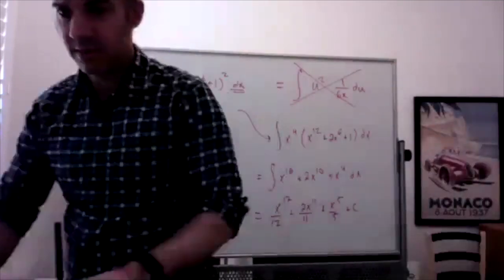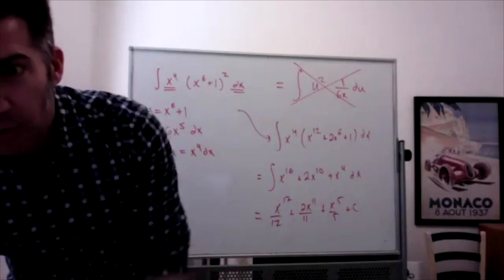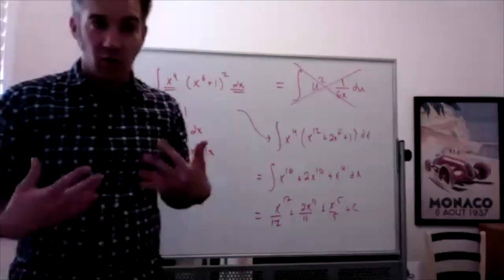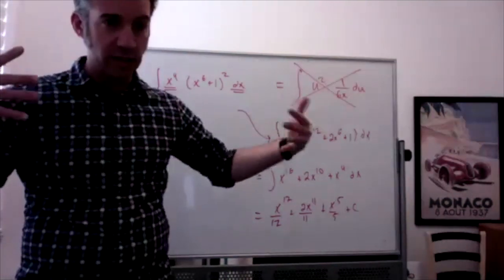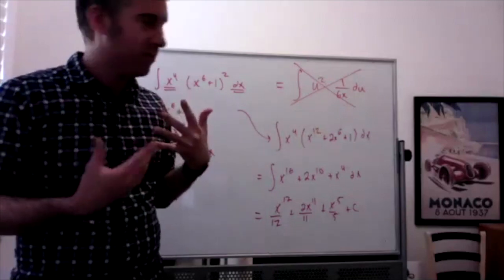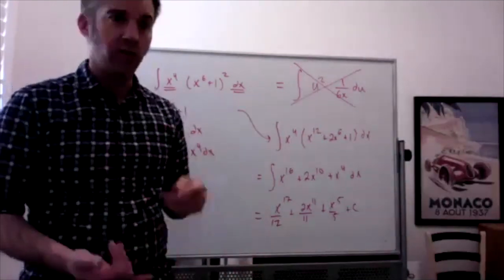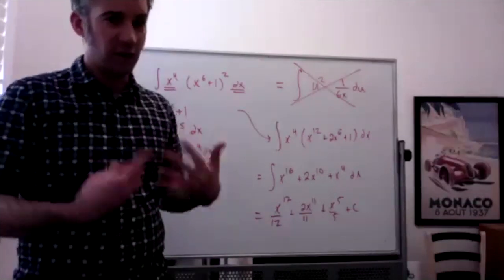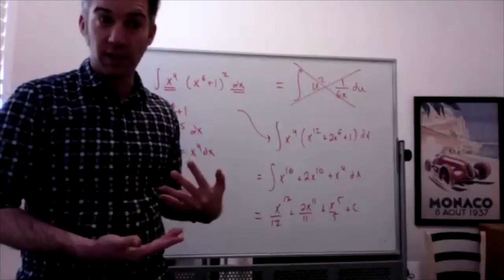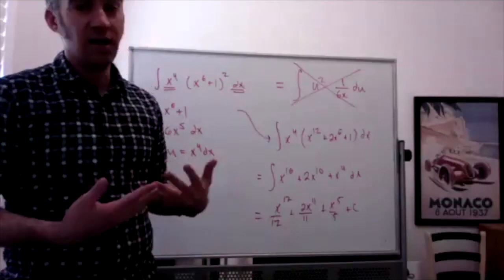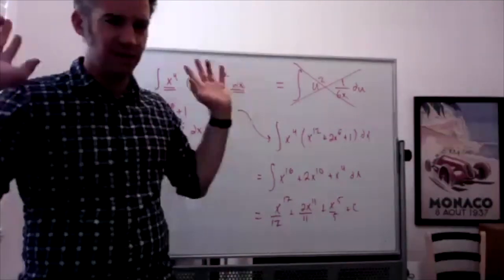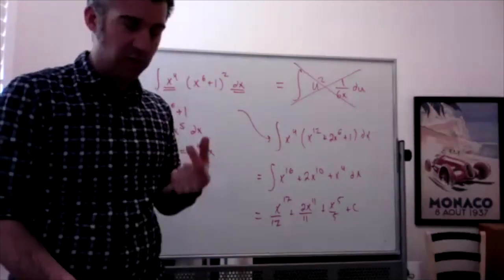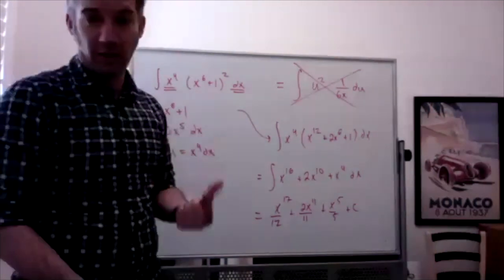Sometimes you just have to multiply it out — that's math. The point is: if you're trying a method and it doesn't seem like it's going to work, don't force it. Try something else. We'll eventually learn integration by parts and partial fractions. If you're doing something and it looks like it's getting super complicated, try something else — you're probably not using the right method.